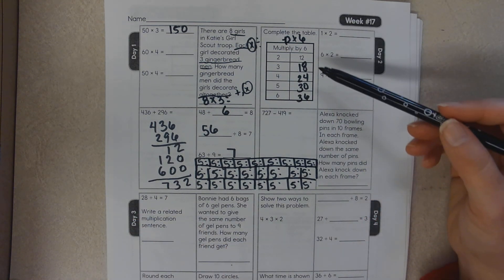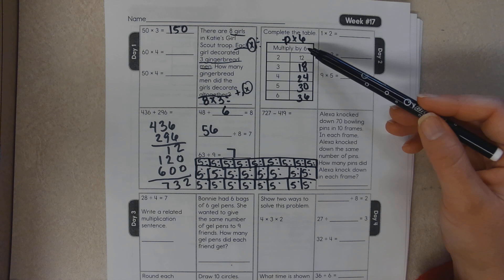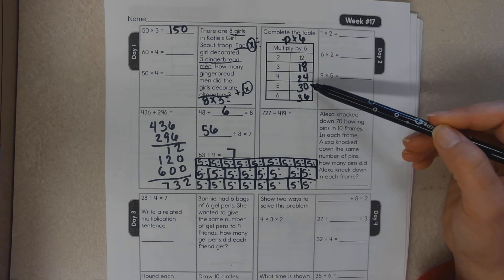Another way you can do this is skip counting by 6: 6, 12, 18, 24, 30.